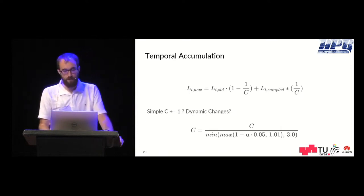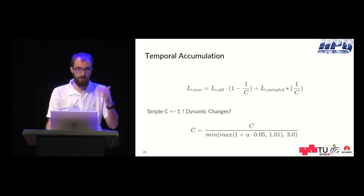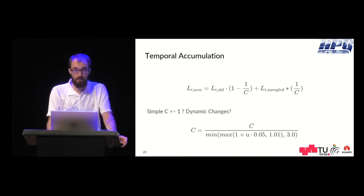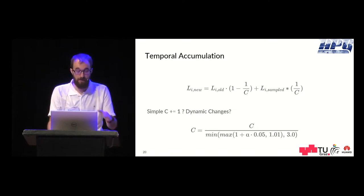Therefore when a change happens in the scene we reduce the accumulation count a bit by this formula which worked well in practice. And by reducing that the new changes are applied in a more quick manner. This accumulation count is adapted based on the angle of change of the cone.